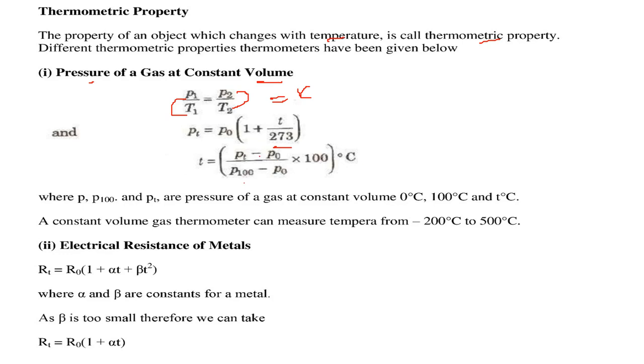This here, this P100 is what? The pressure of a gas at constant volume, 100 degree centigrade. This is P0, this is the pressure of gas at constant volume at 0 degree, this P0.